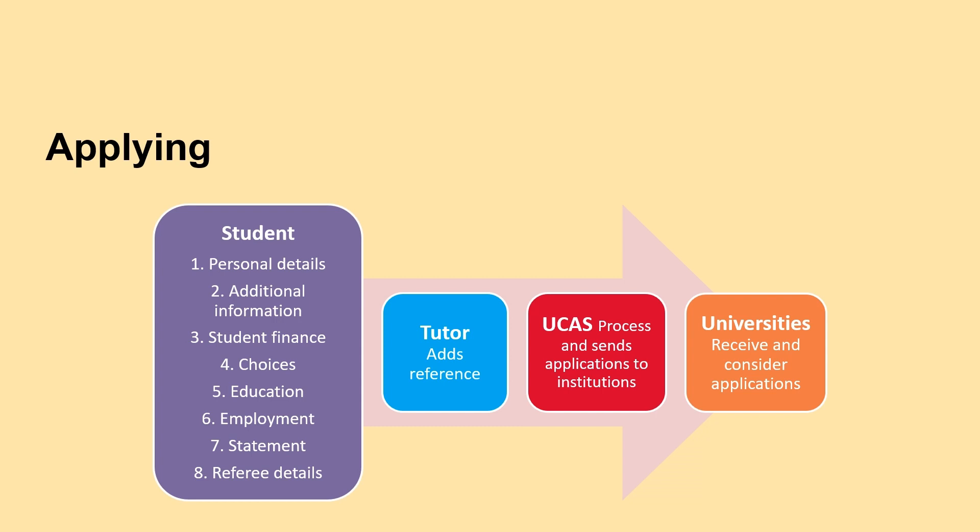You also need to include your referee details — the person who is going to give you your reference, usually your tutor at school or college. Once you have finished and thoroughly checked everything, you press send and it goes to your referee. They will add your reference and send it to UCAS. UCAS will process your application and send it to all of your choices of university. The universities don't know who else you've applied to, and UCAS also has a plagiarism service to check your supporting statement.